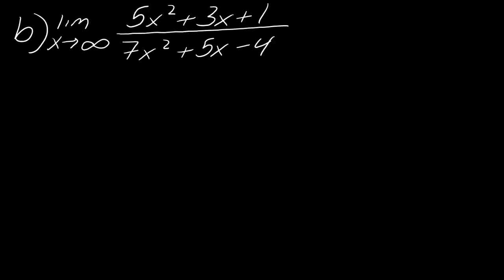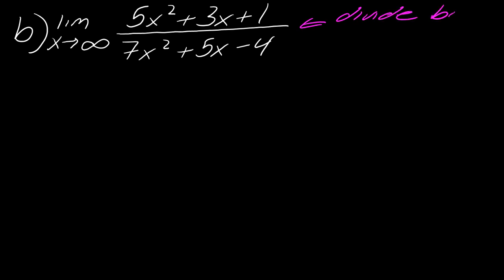The first case was where the highest degree was in the bottom. Now for the second case, I have 5x² + 3x + 1 over 7x² + 5x − 4. The highest degree is actually the same on top and bottom. So I need to divide everything by x squared. Pause here if you want to try that yourself, and then let's meet up.